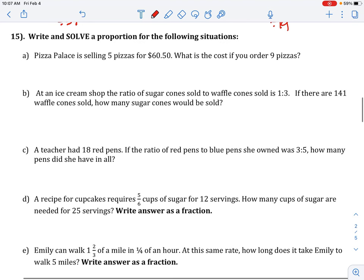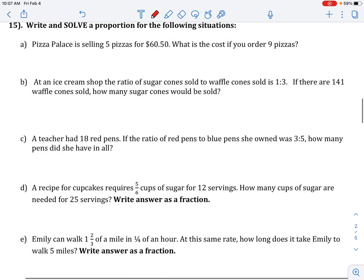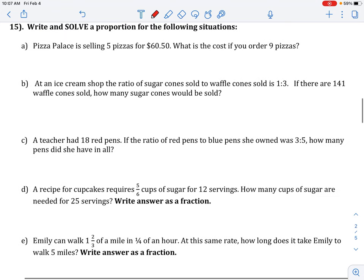Let's go to the word problems. You're going to have a whole page of word problems on your upcoming test that would be very similar to these. Write and solve a proportion for the following situations. Pizza Palace is selling 5 pizzas for $60.50. What is the cost if you order 9 pizzas? Okay. So we're doing money over pizzas.